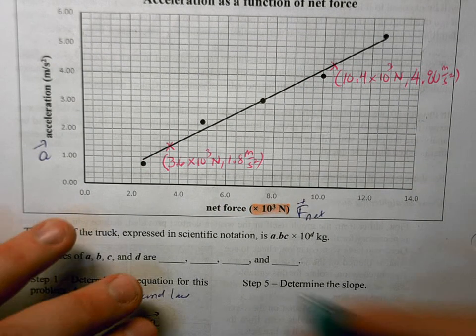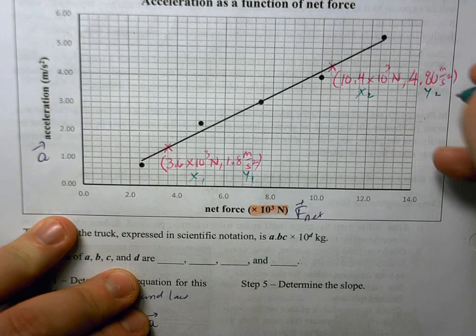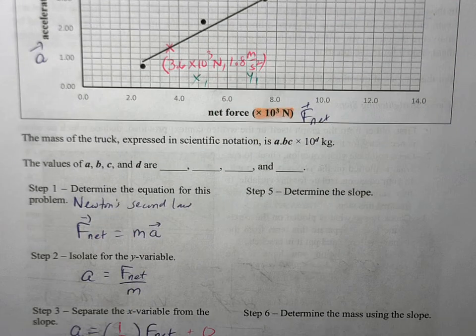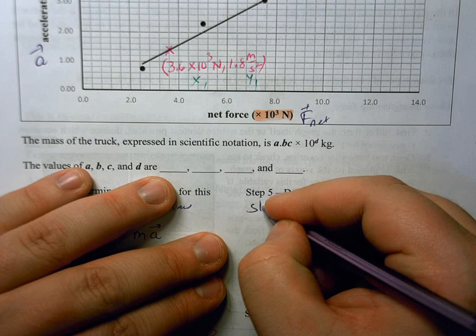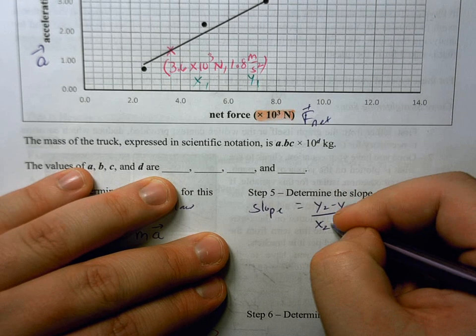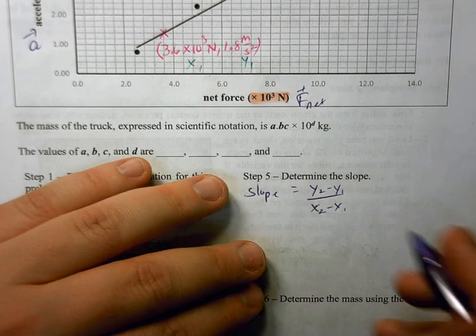I can certainly label this. I can say this is x1, y1. This is x2 and y2. So we're going to find the slope based on those two data points. The slope is going to be y2 minus y1 divided by x2 minus x1. So we're going to take the slope of those two data points.